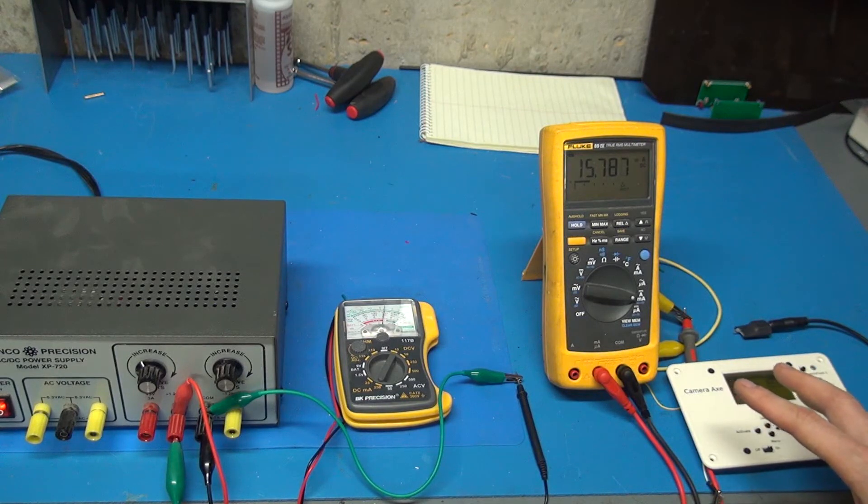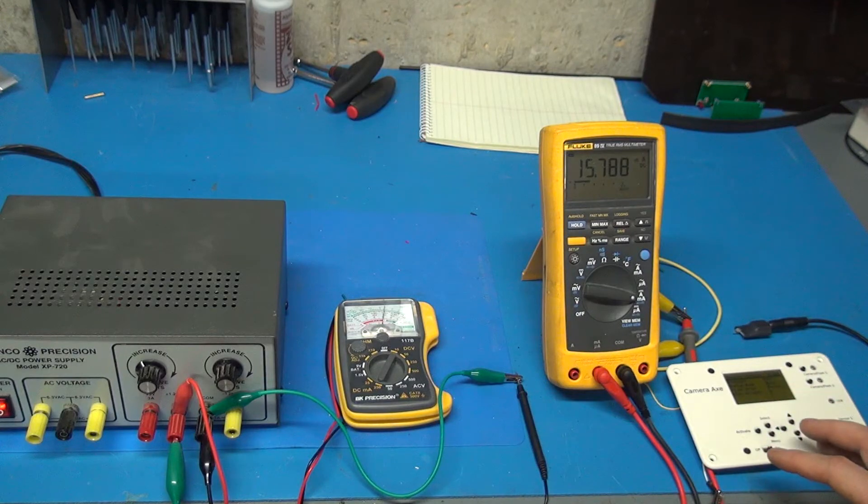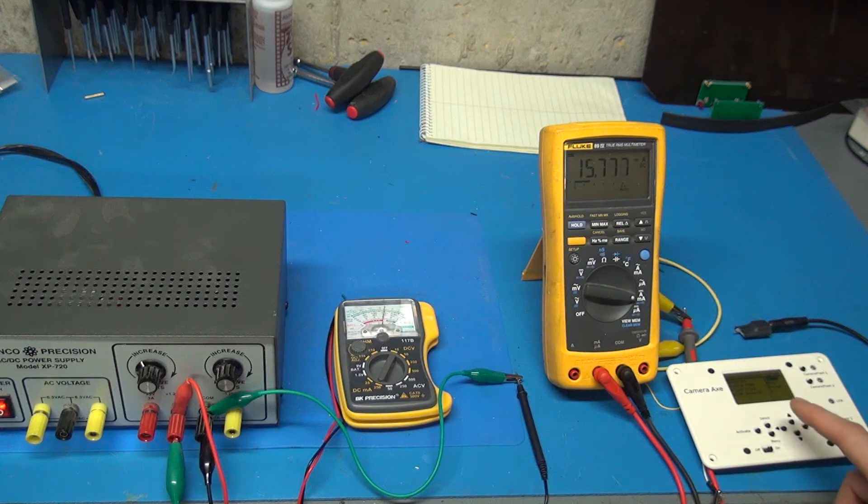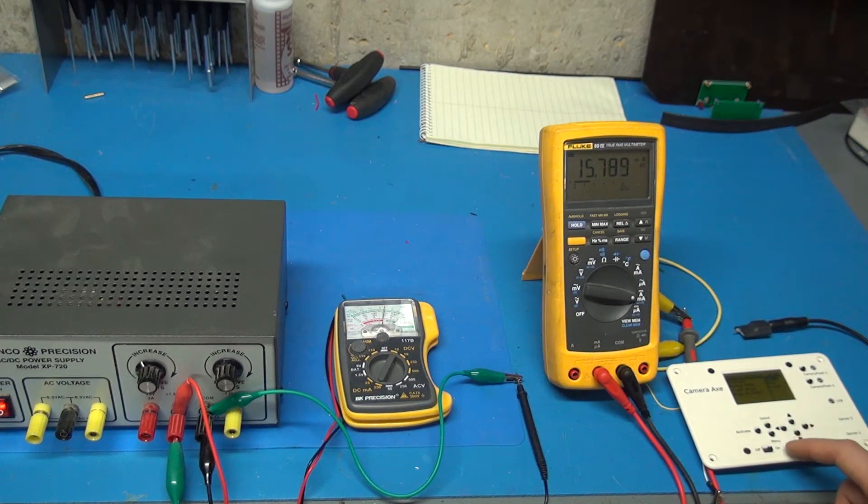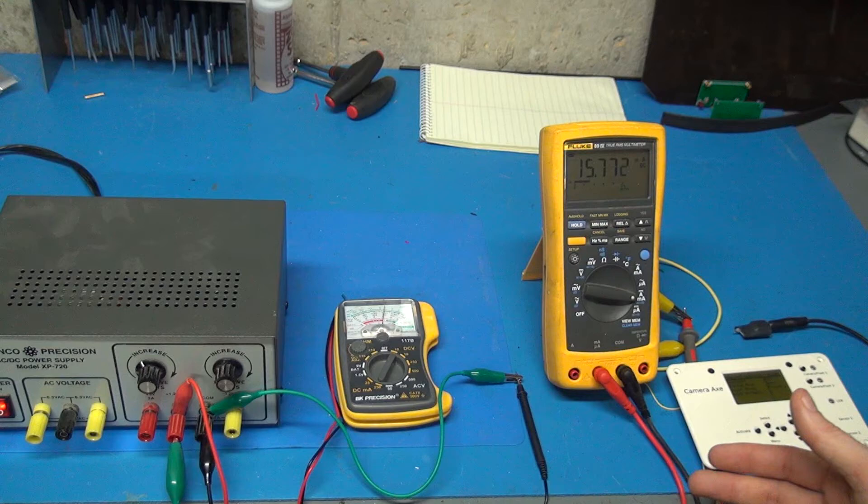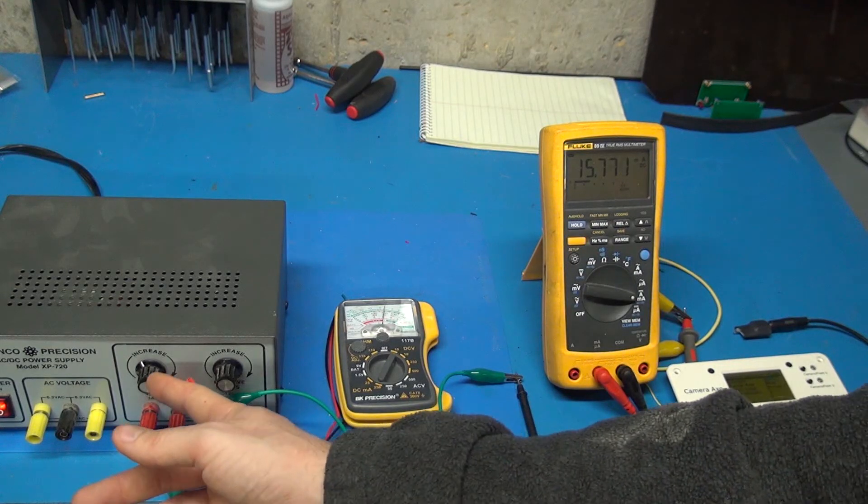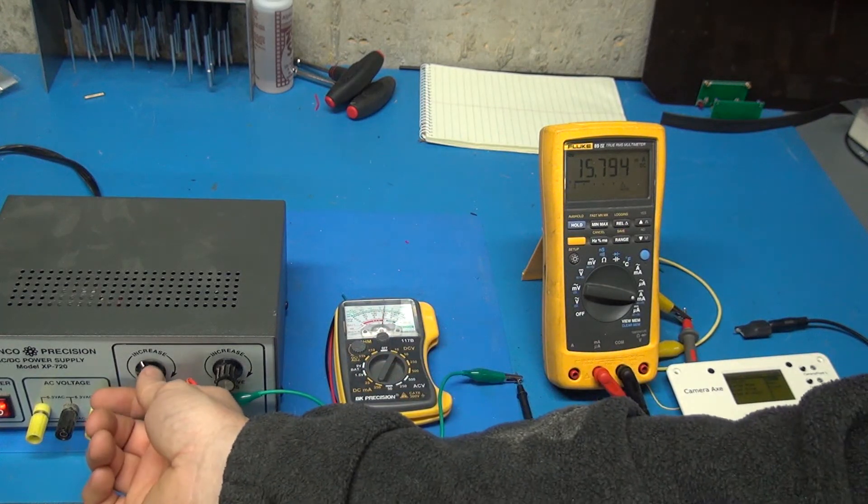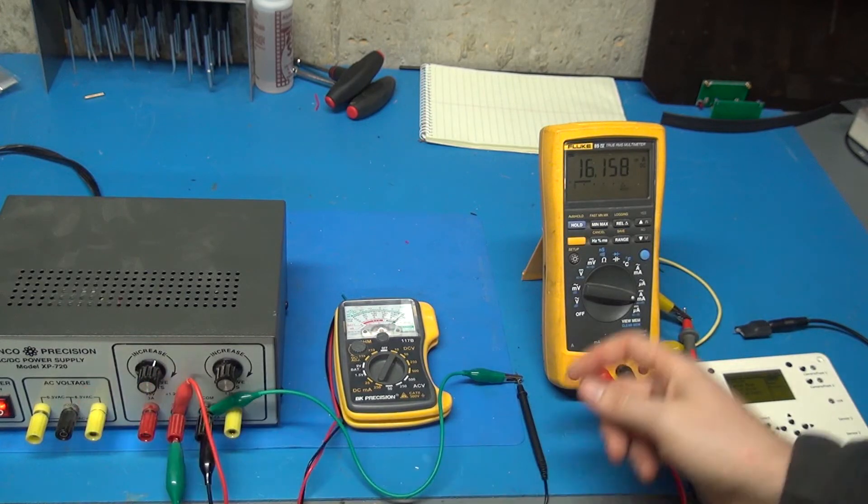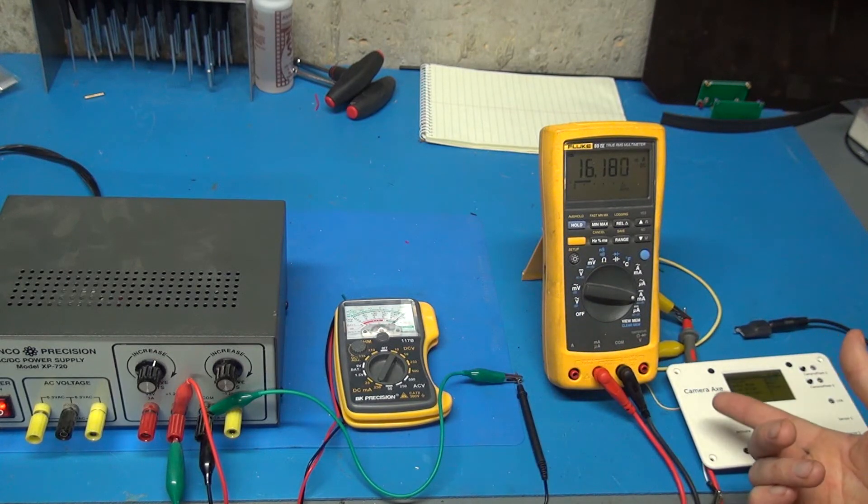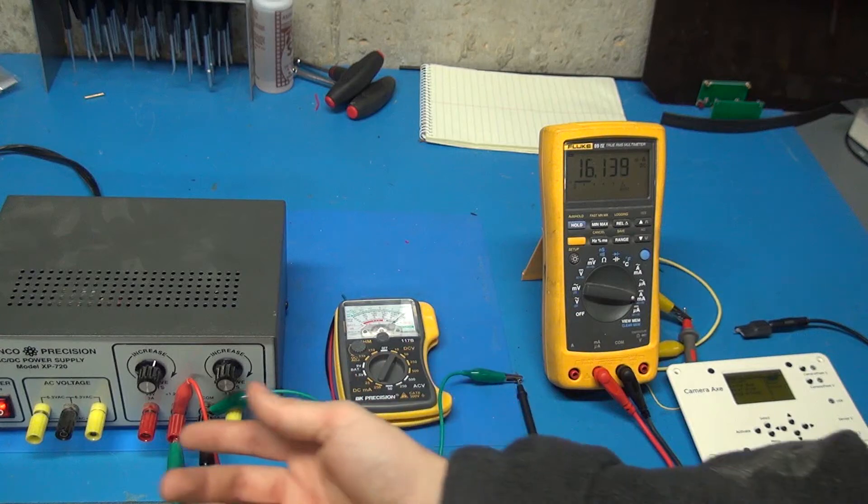I sort of simplified the problem by only looking at milliamps. The reason I can do that is because the Camera Axe circuit board uses a linear regulator. Basically what that means is it effectively uses the same amount of current no matter the voltage that you're using. This knob here will increase voltage and you can see we're at 6 volts right now. Here I'll crank it up to 10 volts. We're using effectively the same amount of milliamps. That's because I'm using a linear regulator.